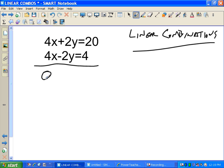4x plus 4x, that's 8x. 2y plus 2y, or positive 2y, negative 2y, they cancel each other out. It's 0. I'm not going to bother to write 0. 20 plus 4 is 24. 8x equals 24. 8 times what equals 24? We're not sure. We can divide both sides by 8. We get x is equal to 3.